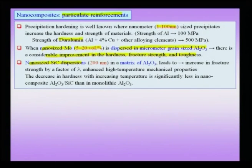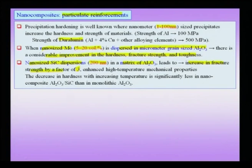Nano-sized silicon carbide dispersions — about 200 nanometers — in the alumina matrix also lead to an increase in fracture strength by a factor of 3. Alumina, being an oxide ceramic, is resistant to corrosion but has poor fracture toughness. Adding silicon carbide dispersions at the nano scale gives a fracture strength increase of about factor 3, which is a pretty good increase. The high-temperature mechanical properties are also pretty good — ceramics do find application at high temperature — making silicon carbide a good additive.